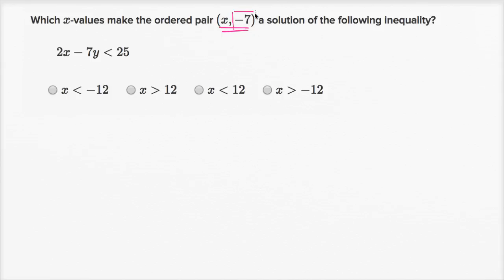All right, now let's work through it together. They're constraining that y is going to be equal to -7. And so if we make that constraint, we can replace this y with a -7. So we can rewrite the inequality as 2x - 7 times -7, since we're constraining y to be -7, is less than 25.